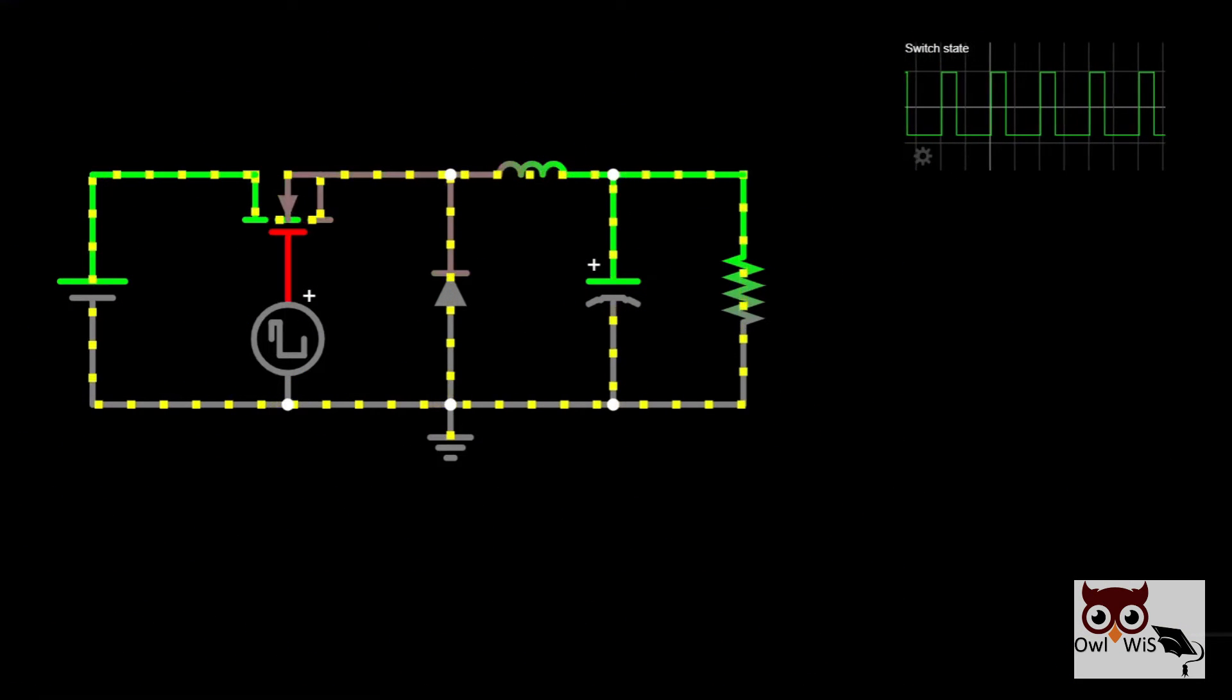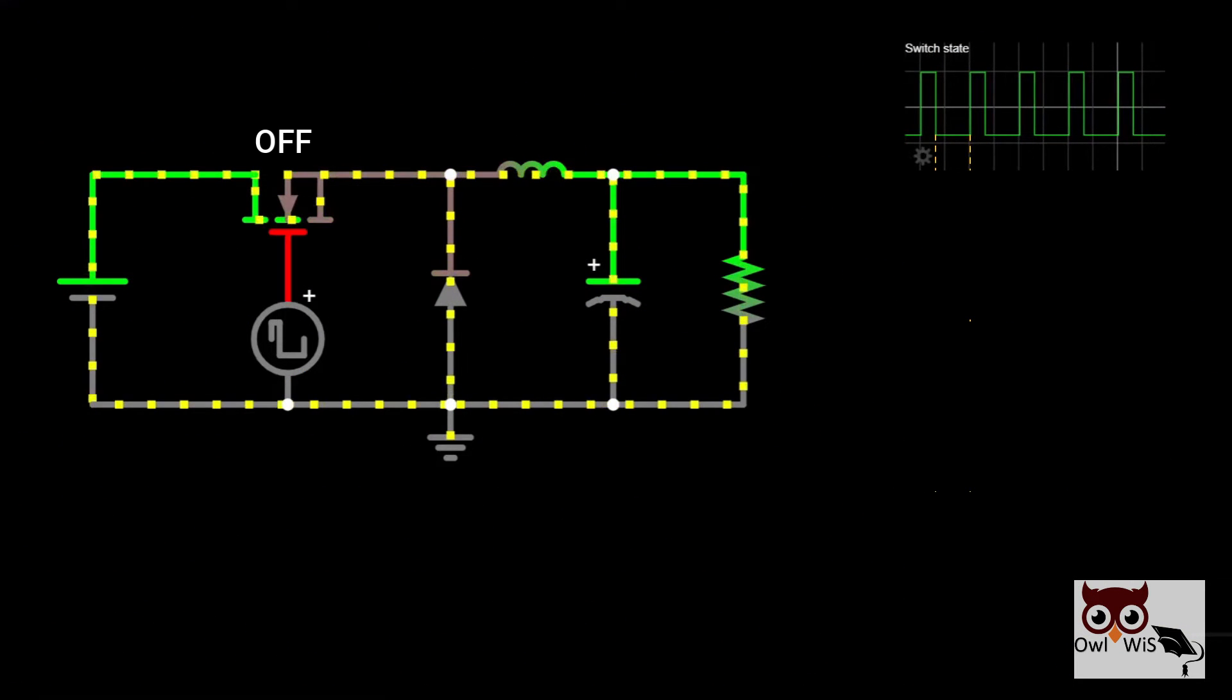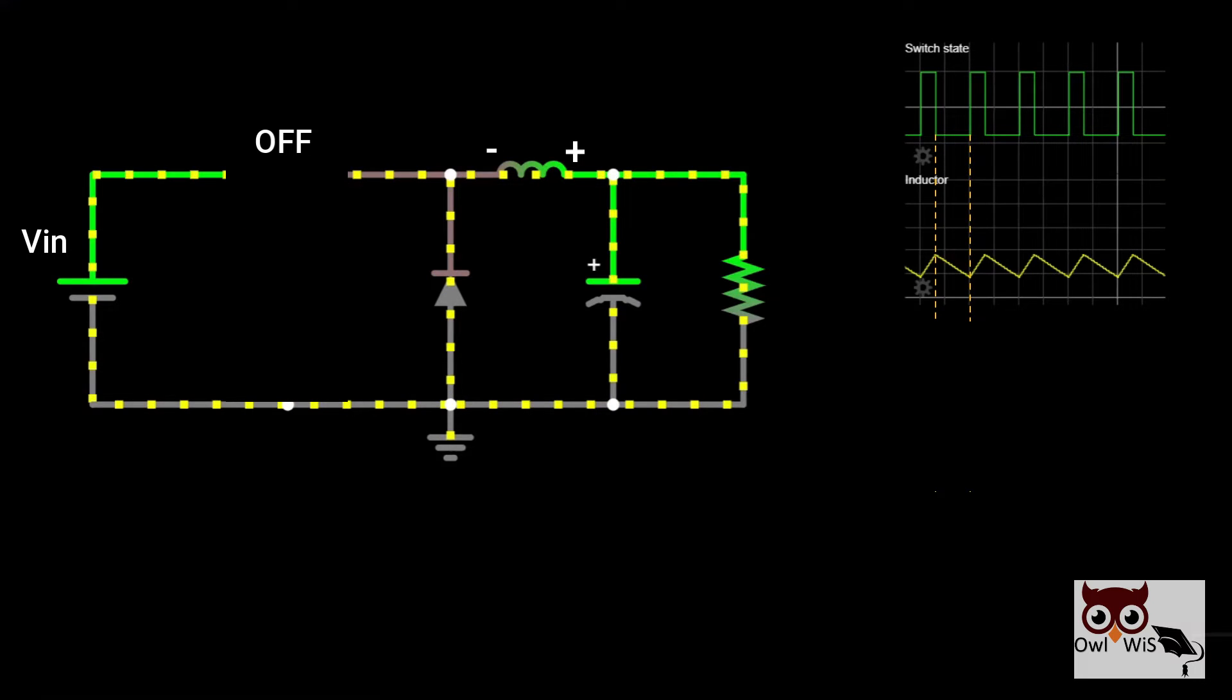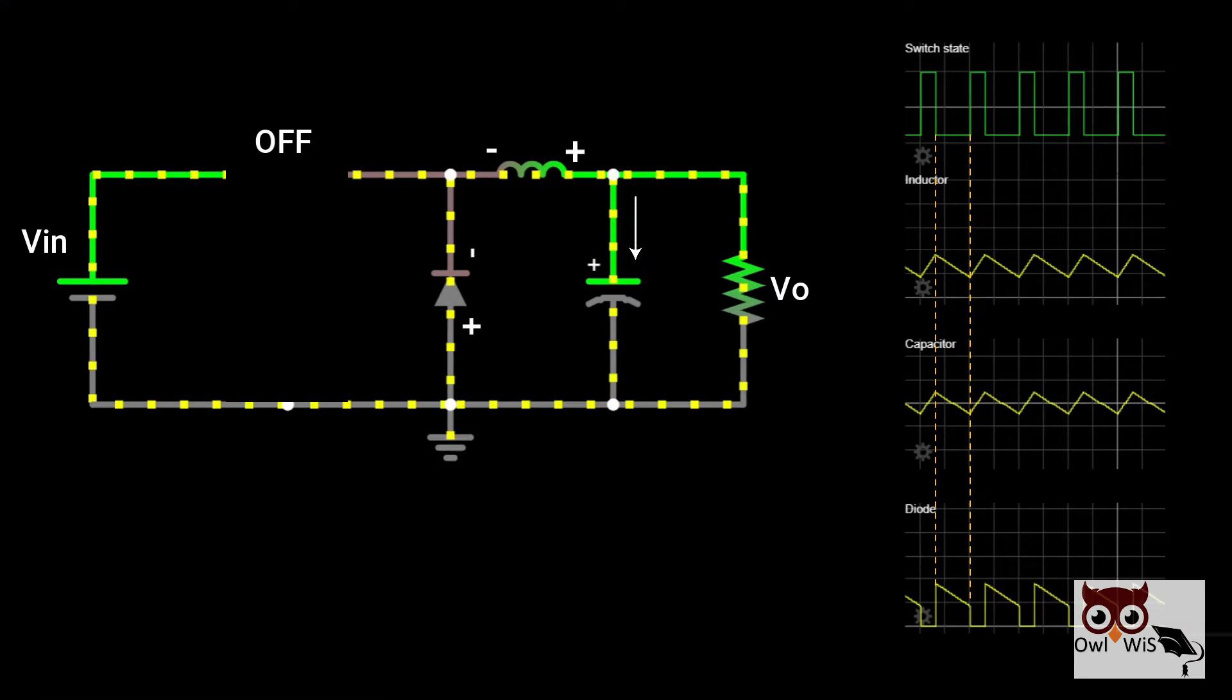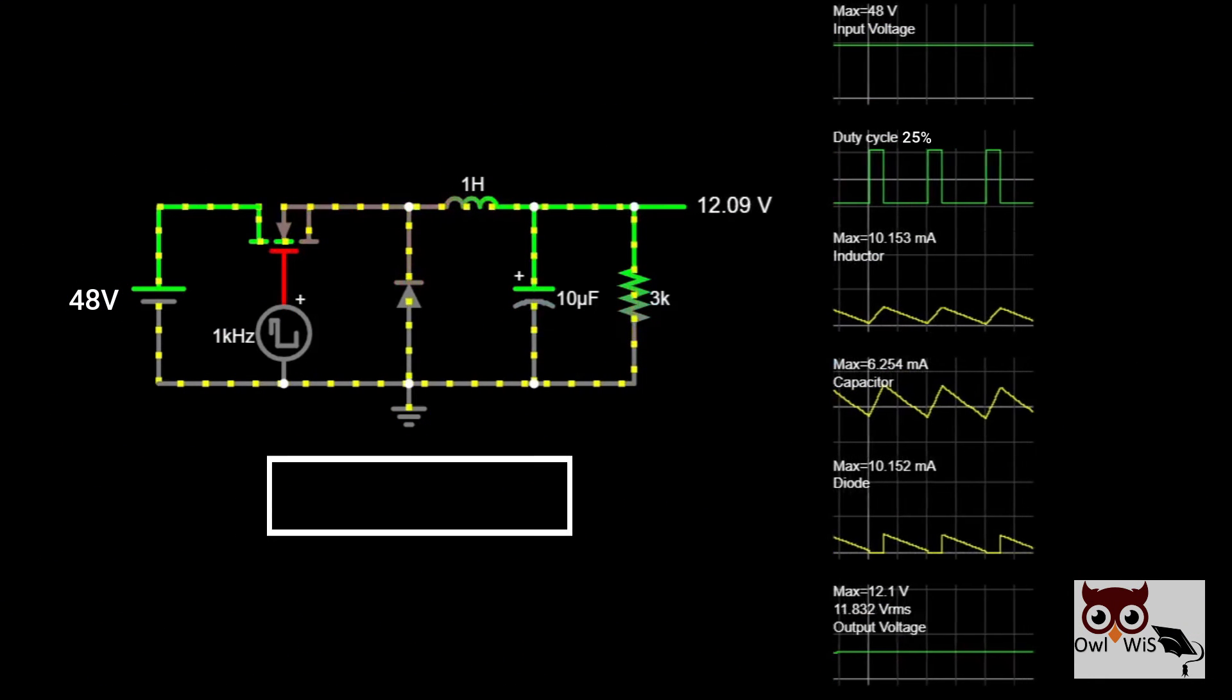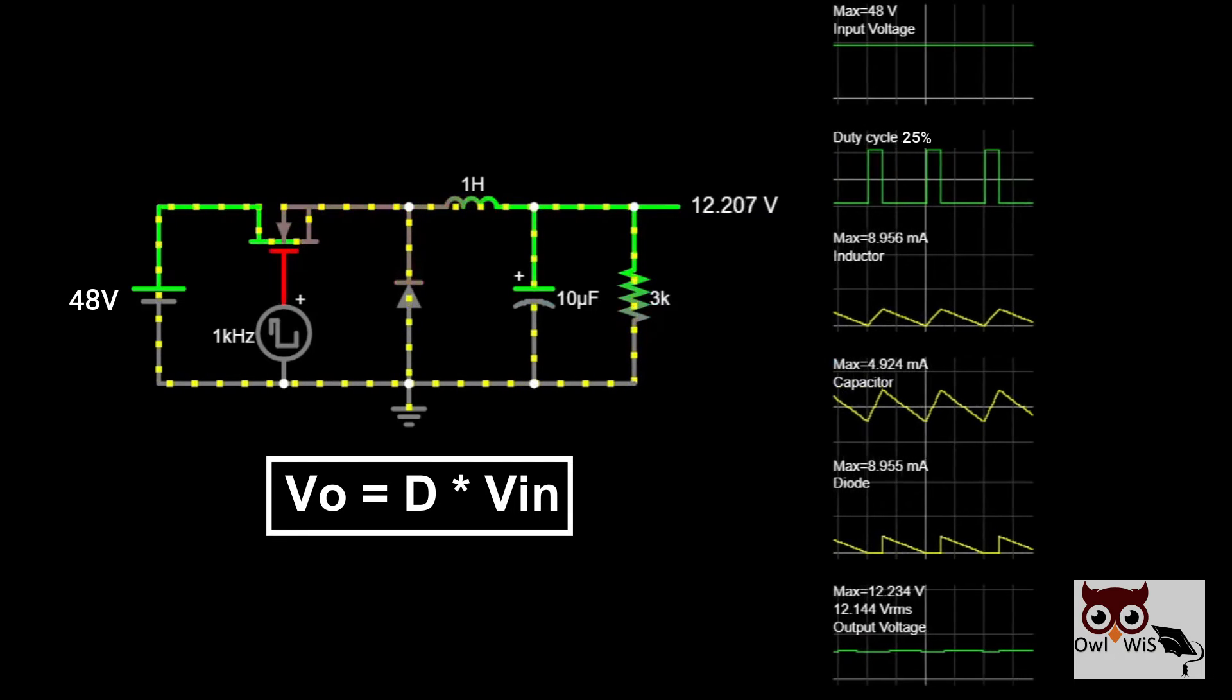When the transistor switch is open (off state), the input is disconnected from the circuit and the inductor acts as the energy source. The stored inductor energy is transferred to the load through the capacitor. Diode is forward biased, providing a return path. The output voltage is equal to duty cycle multiplied by input voltage.